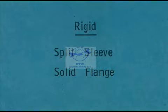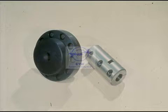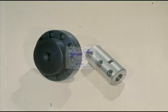Our first two types of couplings are in the rigid class. They are the split sleeve and solid flange types. Neither of these types of couplings will bend or give. They are designed to solidly connect the drive and the driven shafts, making them, in effect, a single shaft.